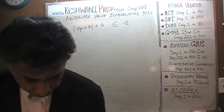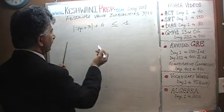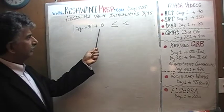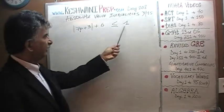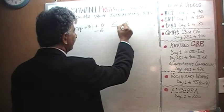Alright, so we have to solve this problem. Let's do it. First thing to do is to get rid of this 6 here. We get rid of this 6 by subtracting 6 from both sides. Subtract 6 from here, subtract 6 from here. This is a positive 1.